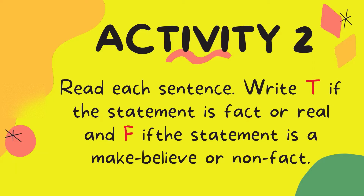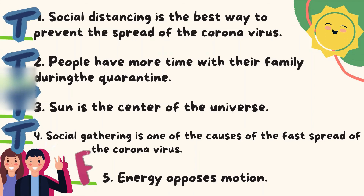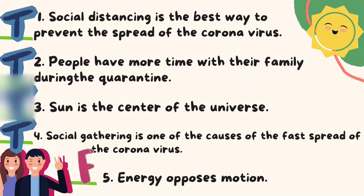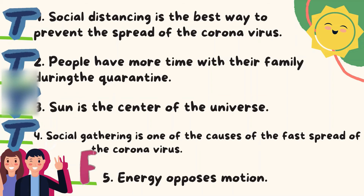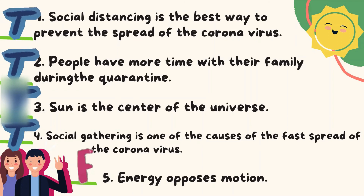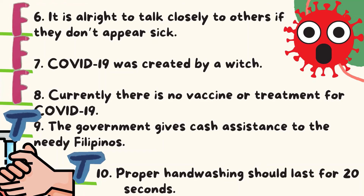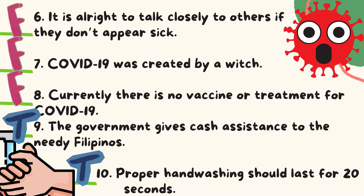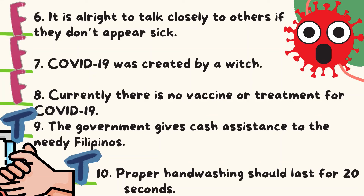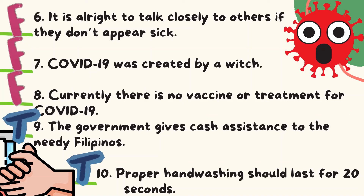Now, here are the answers for Activity 2. One: T. Two: T. Three: T. Four: T. Five: F. Six: F. Seven: F. Eight: F. Nine: T. Ten: T. Where T stands for fact or real, and F stands for make-believe or non-fact.